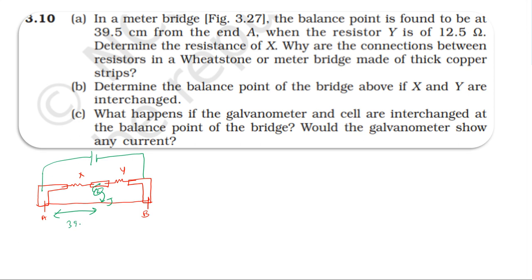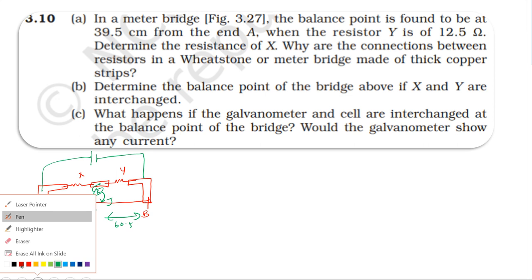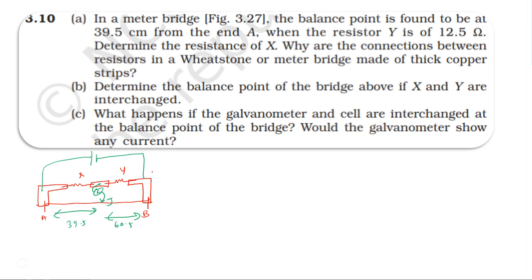The balancing point is at 39.5 centimeters, so the right side is 60.5 centimeters. Using the meter bridge formula: X divided by Y is equal to the balancing point on the left side divided by the right side, that is 39.5 divided by 60.5.